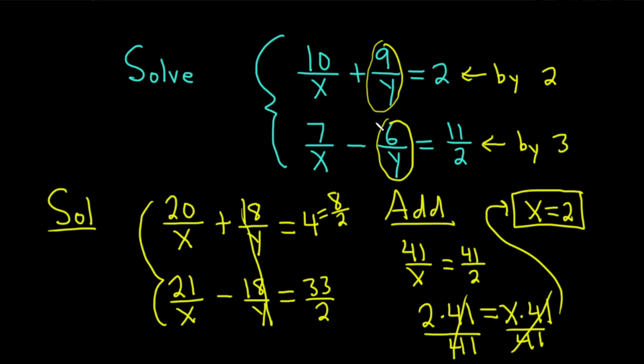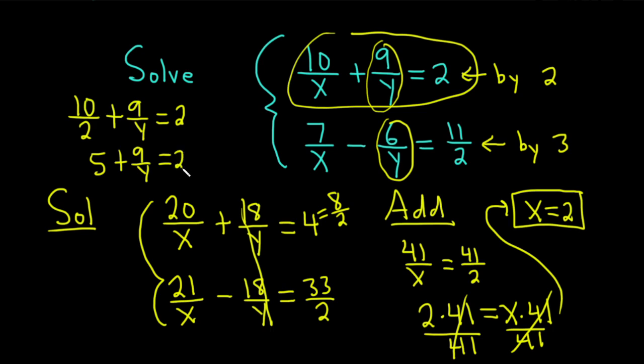Now that we have x, we can plug it into any of these equations to find y. I vote for the first one. So let's go there. Putting in 2 where the x is, we get 10 over 2 plus 9 over y equals 2. 10 over 2 is 5. We have 5 plus 9 over y equals 2. Then we can subtract 5 from both sides.